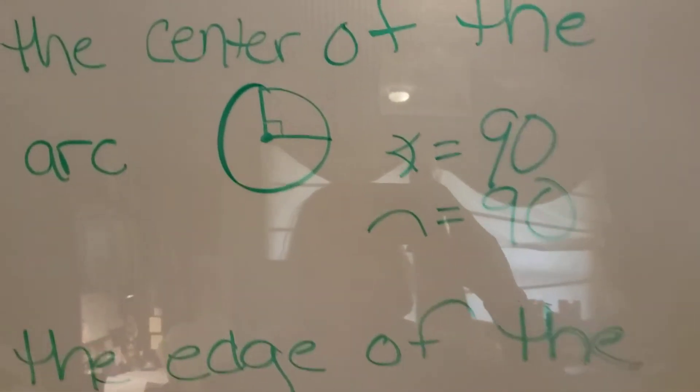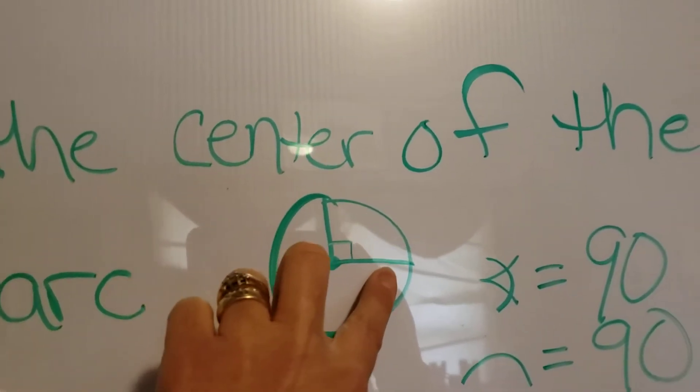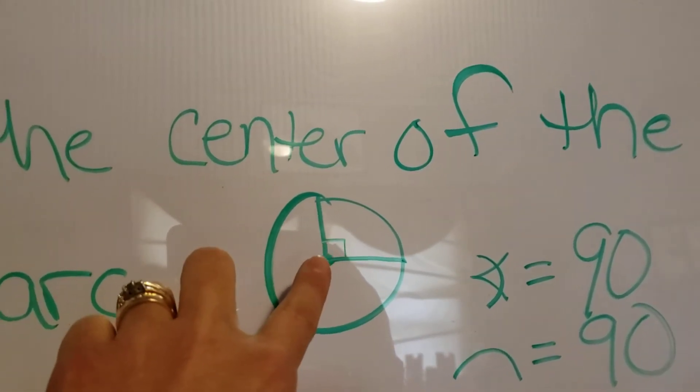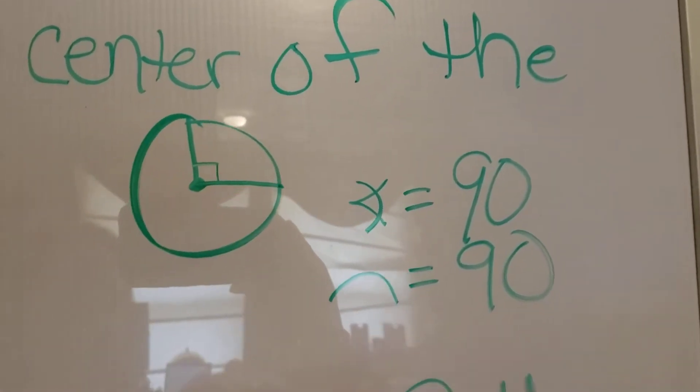So if this is my circle and that's my center, this radius and that radius equal a 90 degree angle. So if my angle is 90 degrees, my arc is also going to be 90.